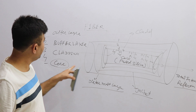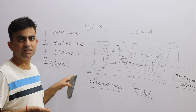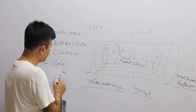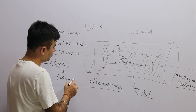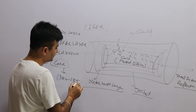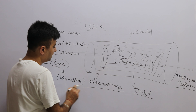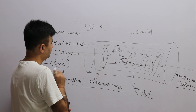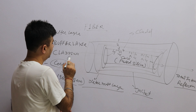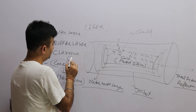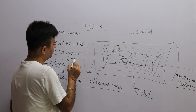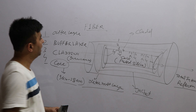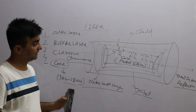These different layers also have specific sizes. The core is very, very thin — around 9 micrometers to 25–30 micrometers. This thin layer carries the light. The cladding is a little larger, around 50 micrometers to 200 micrometers. The buffer layer consists of very thin layers as well.